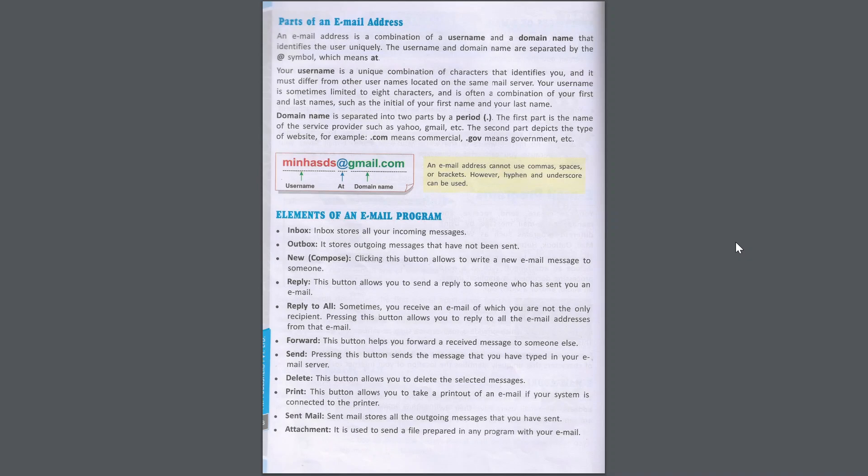Your username is sometimes limited to eight characters and is often a combination of your first and last names, such as the initial of your first name and your last name. The domain name is separated into two parts by a period. The first part is the name of the service provider such as Yahoo, Gmail, etc. The second part depicts the type of website — for example, .com means commercial, .gov means government, etc.